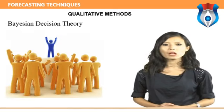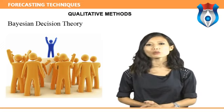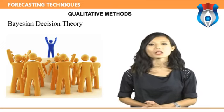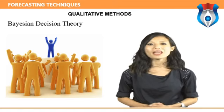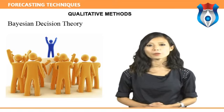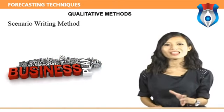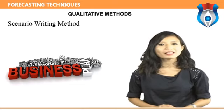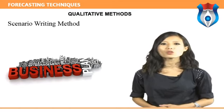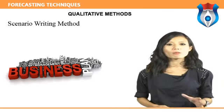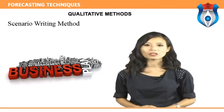Bayesian decision theory has been placed under techniques, although it is really a mixture of subjective and objective techniques. This technique is similar to critical path analysis in that it uses a network diagram and probabilities must be estimated for each event over the network. Scenario writing method: under the scenario writing approach, the forecaster starts with different sets of assumptions. For each set of assumptions, a likely scenario of the business outcome is charted. Thus the forecaster generates several different future scenarios, and the decision maker is presented with these and has to decide which scenario is most likely to prevail.